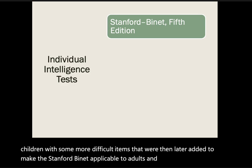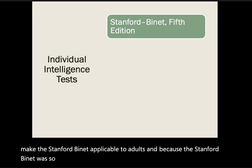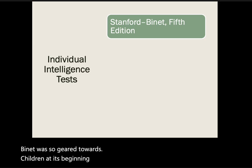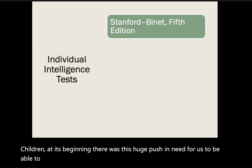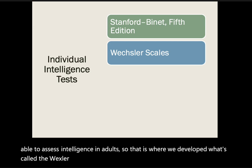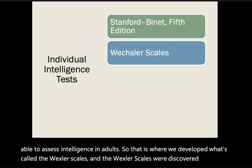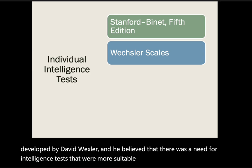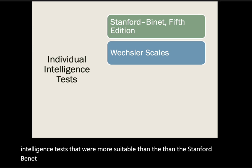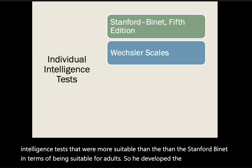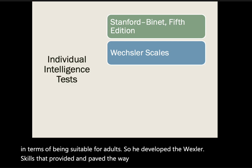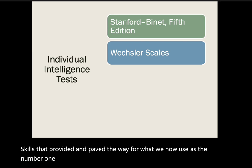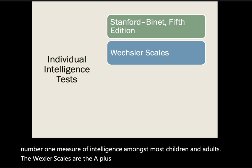Because the Stanford-Binet was so geared towards children at its beginning, there was a push to assess intelligence in adults. That is where the Wechsler scales were developed by David Wechsler, who believed there was a need for intelligence tests more suitable for adults than the Stanford-Binet. The Wechsler scales paved the way for what we now use as the number one measure of intelligence among most children and adults — they are the A-plus standard in our current world.